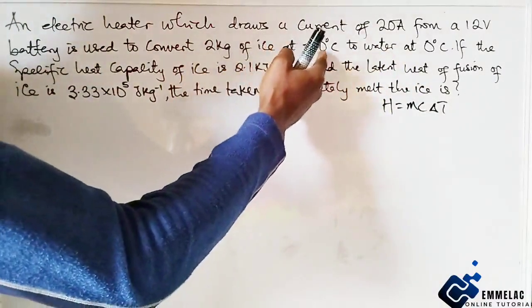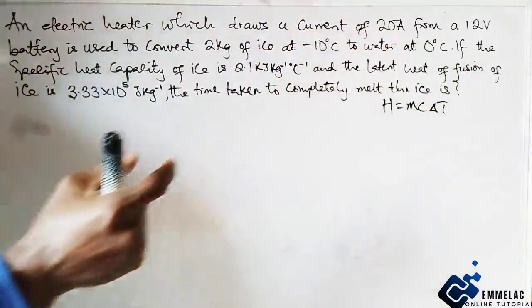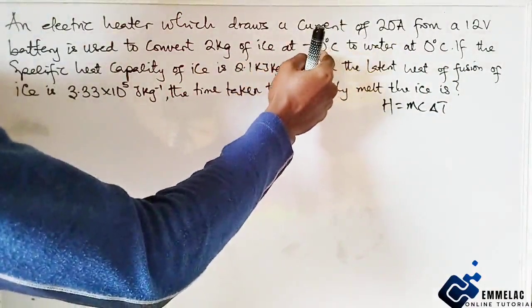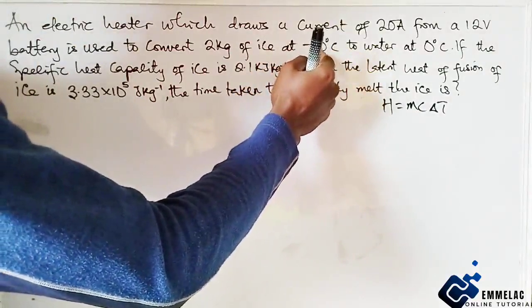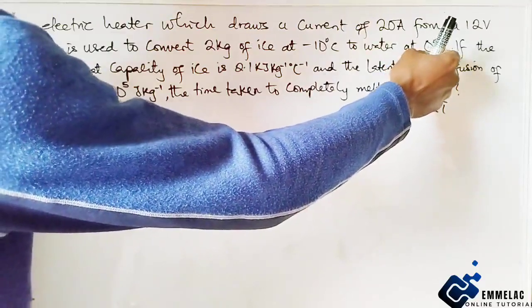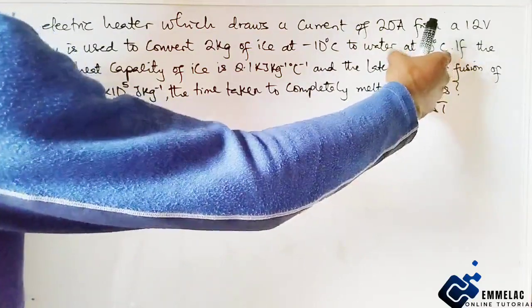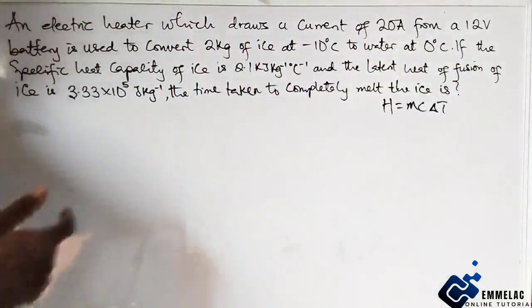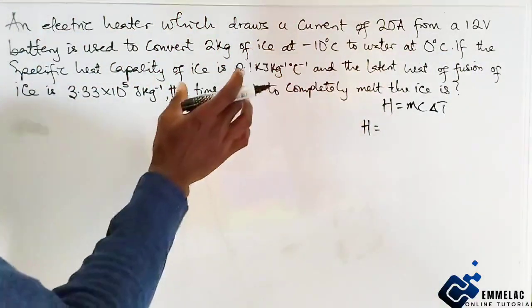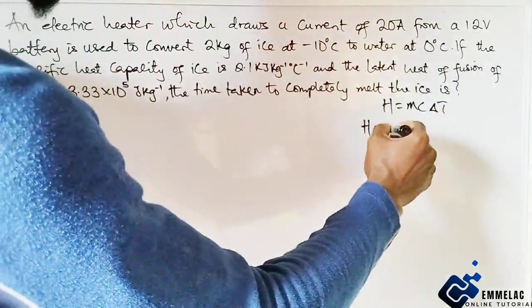So we need to find the energy this ice absorbs to change from minus 10 degrees Celsius to 0 degrees Celsius, and from ice at 0 degrees to water at 0 degrees. First of all, let us find the heat absorbed by the ice to change from minus 10 degrees to 0 degrees.